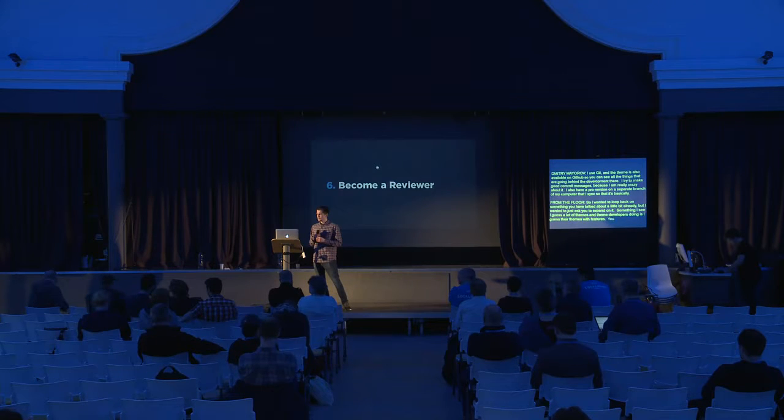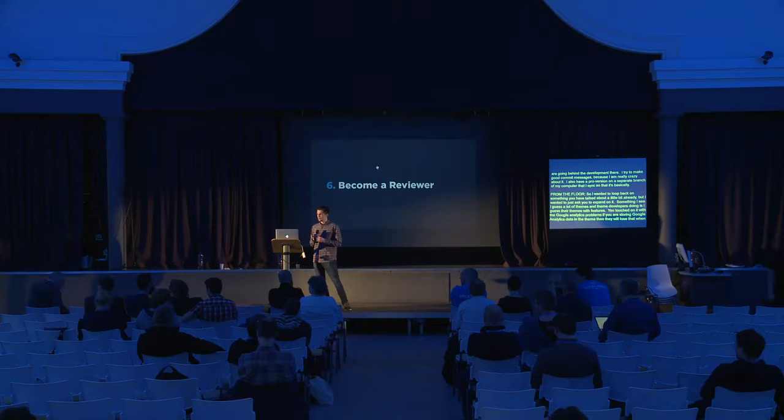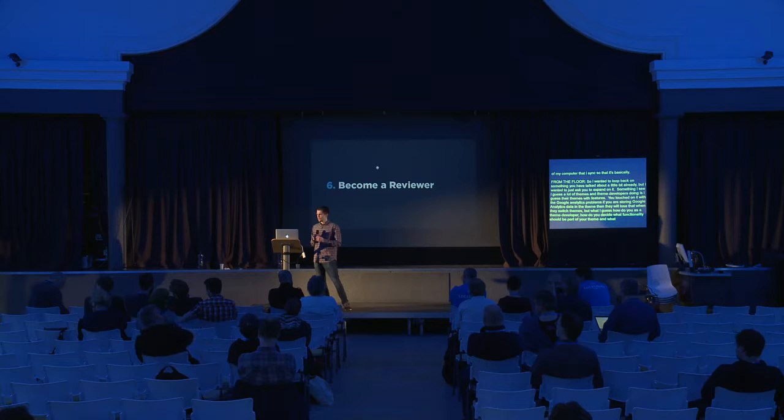Question: A lot of themes fill their themes with features. How do you, as a theme developer, decide what functionality should be part of your theme and what should be in a plugin? It's a really simple rule of thumb: if the option deals with the visual representation of the website, it's theme territory. If it has nothing to do with visual representation, it's a plugin. I'm building a new theme right now and had that question — is it a good idea to add an option to a widget that would change the text alignment? I asked on Slack, and some theme review team admins gave me that same advice.